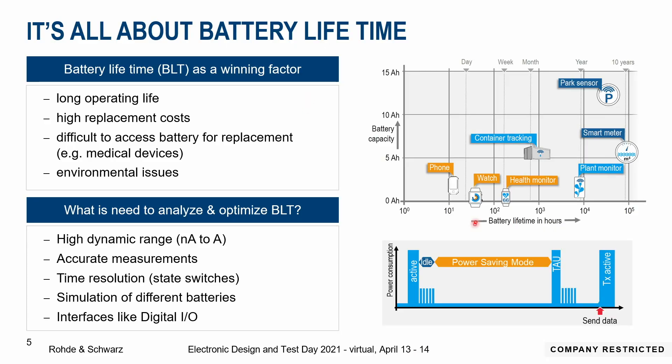What do we actually need to analyze and optimize battery lifetime? There are a number of requirements needed in a device to do these tasks. Looking at an IoT device, we see it in a sleep state where power consumption is very low, but sometimes data transfer occurs and power consumption jumps up quite high. This is why you need a very high dynamic range that can measure from just a few nanoamps up to several amps, quite accurately, with a good time resolution, because these switches can occur within just a few microseconds going from sleep to sending state.